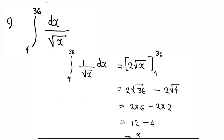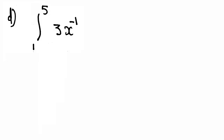So the integral from 4 to 36 of 1 by root x dx equals 2 times root x, evaluated from 4 to 36. Applying limits: 2 times root 36 minus 2 times root 4, that is 2 times 6 minus 2 times 2, which equals 12 minus 4, giving 8.